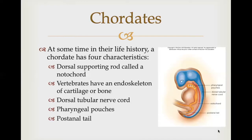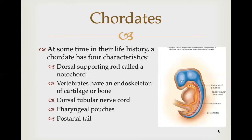To start our discussion of chordates, we'll first focus on the invertebrate chordates. In a few invertebrate chordates, the notochord is never replaced by the vertebral column. In tunicates, this is the case — tunicates live on the ocean floor and take their name from the tunic that makes adults look like thick-walled squat sacks. They are also called sea squirts because they squirt water from one of their siphons when disturbed. The tunicate larva is bilaterally symmetrical and has the four chordate characteristics. Metamorphosis produces the sessile adult, in which cilia move water into the pharynx and out through numerous gill slits — the only chordate characteristic that remains in the adult tunicate.